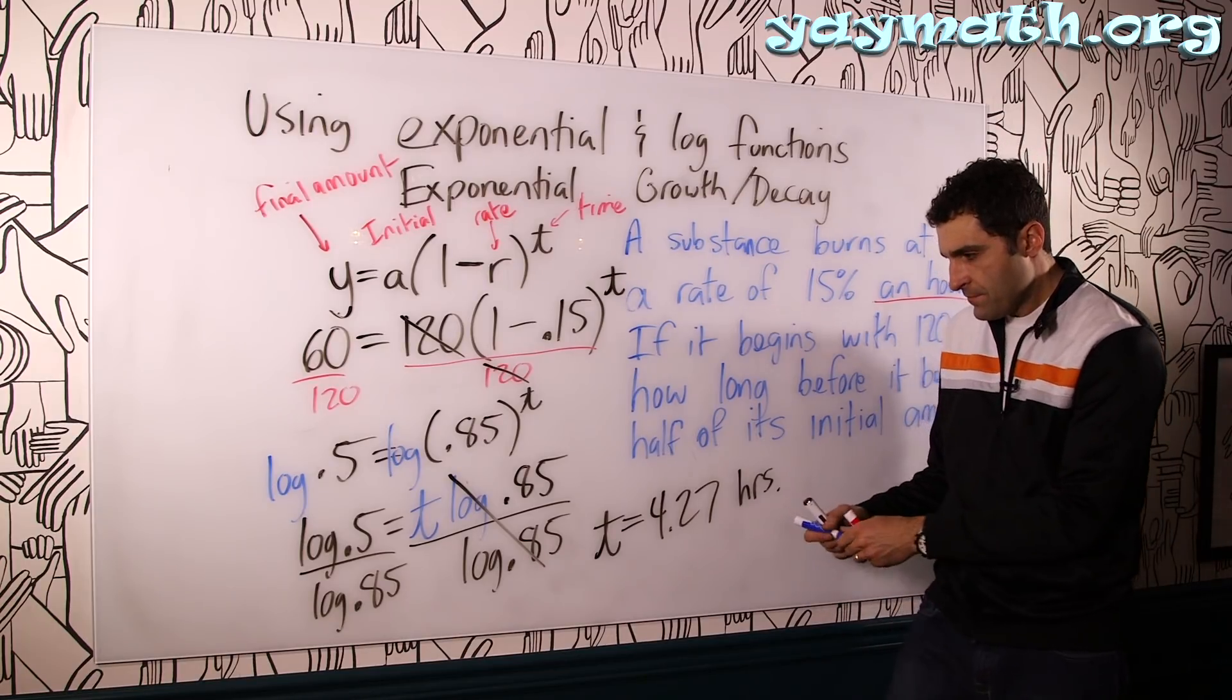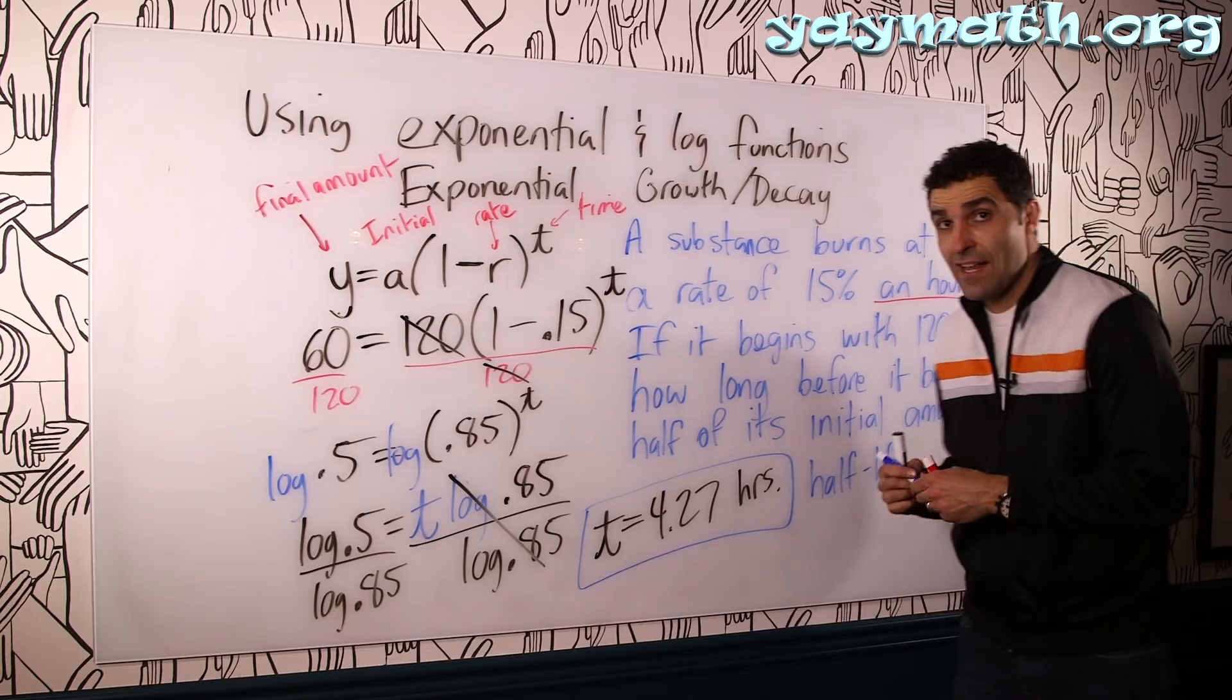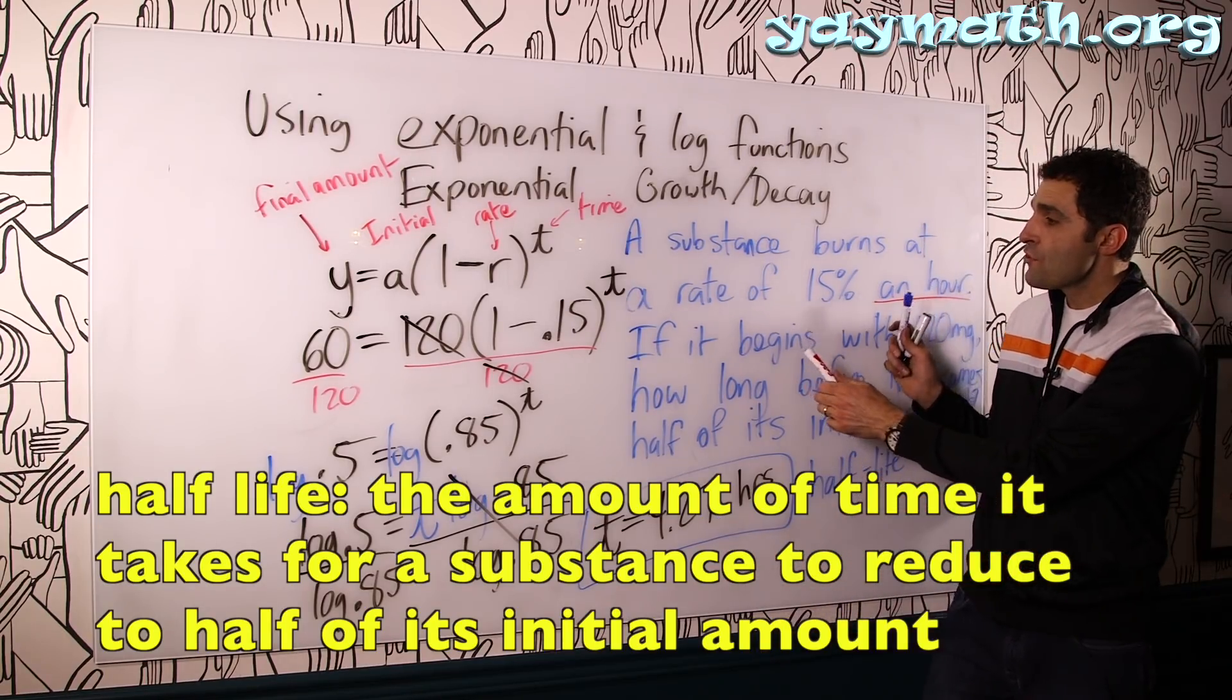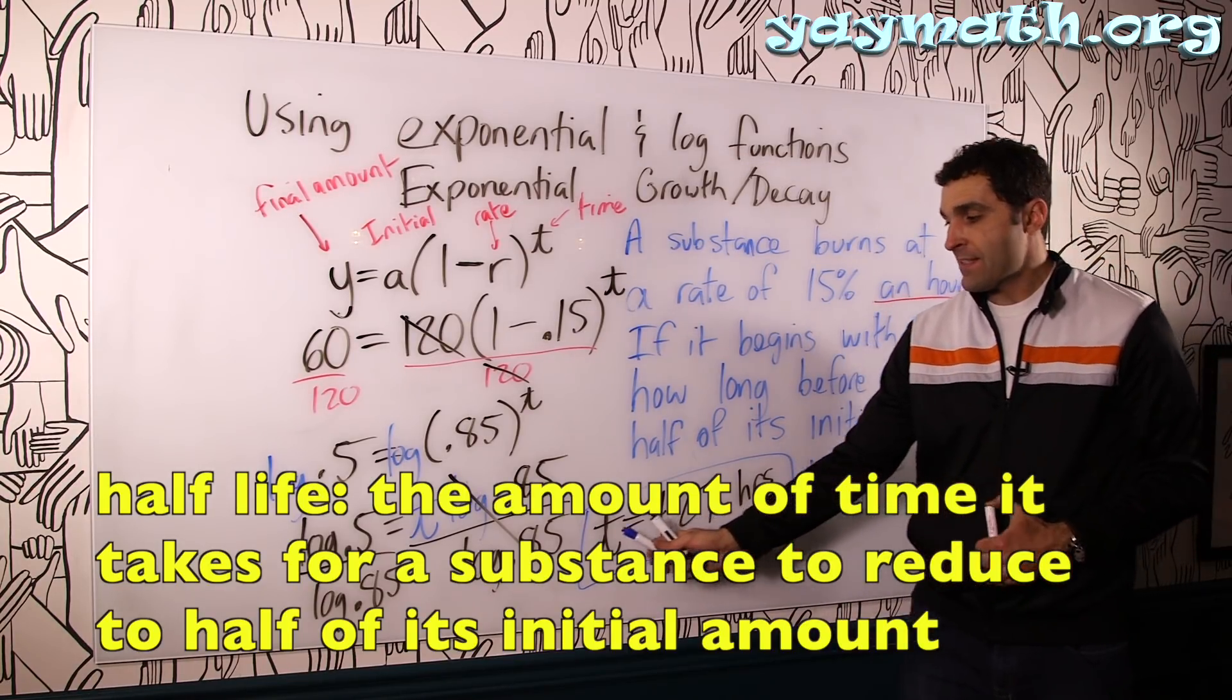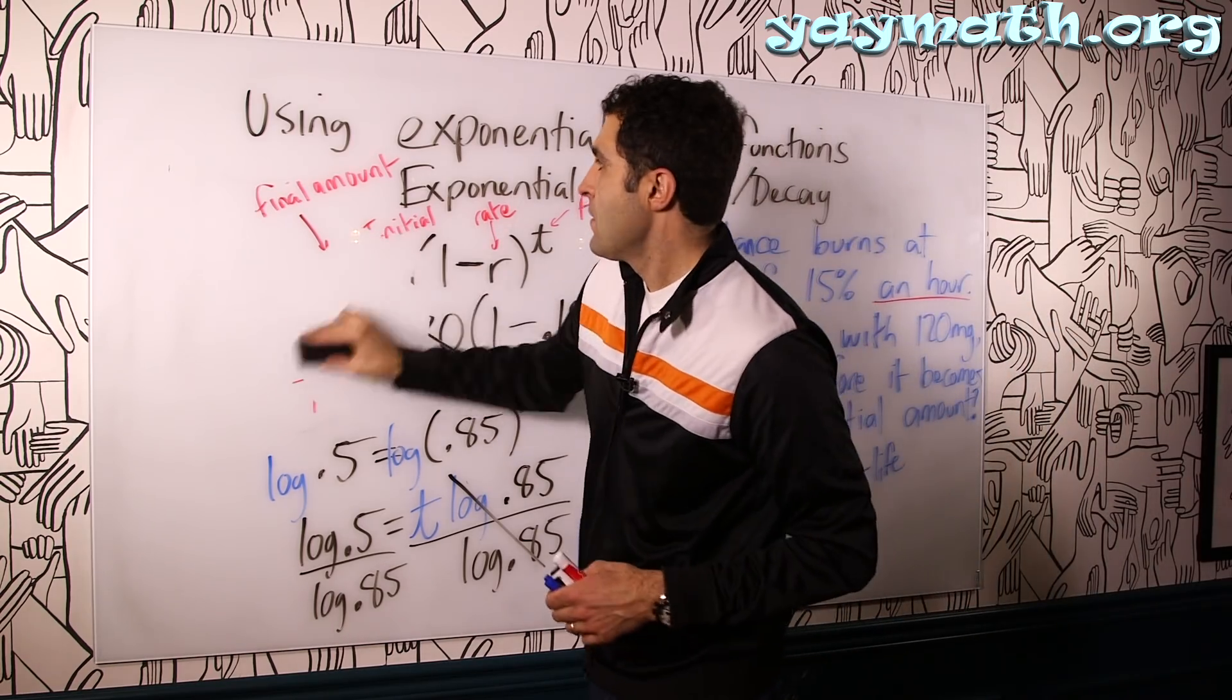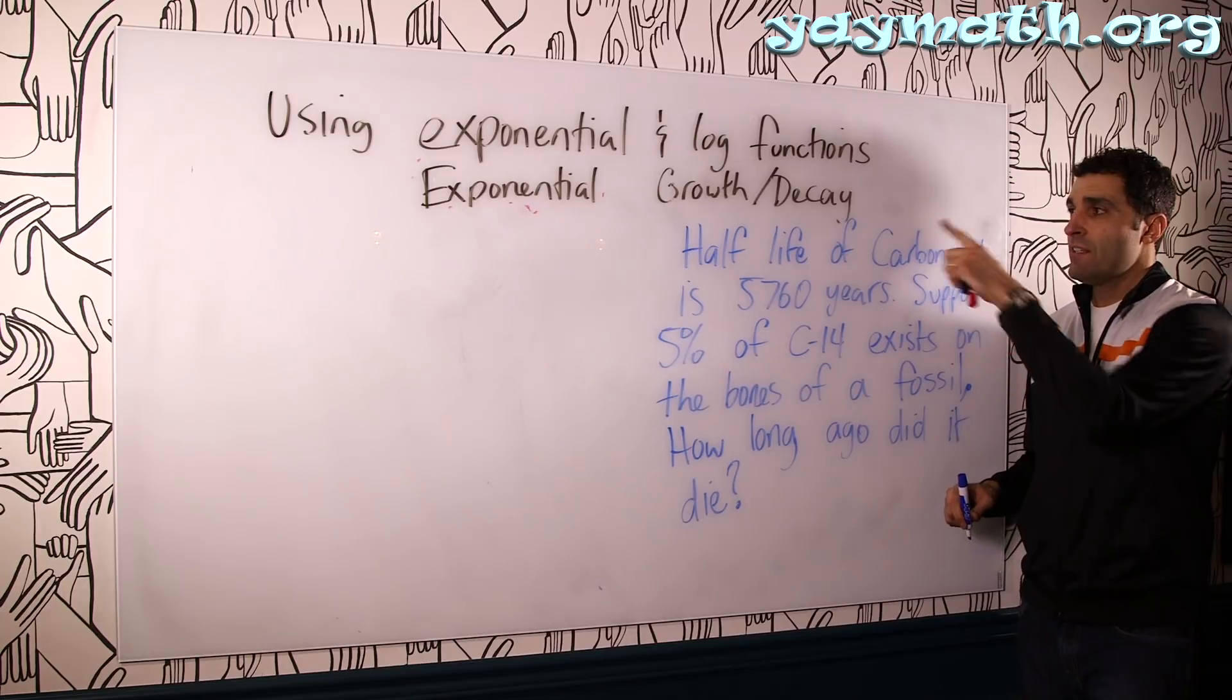This amount of time right here is a very important increment. This is called half-life. Let's define that right now because it's going to feed into the next problem. The next problem talks about half-life. Half-life is the amount of time it takes for a substance to reduce to half of its initial amount. Again, half-life is a measure of time. It's the amount of time it takes for a substance to reduce to half of its initial amount.